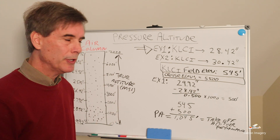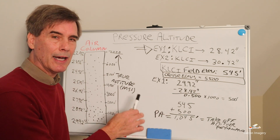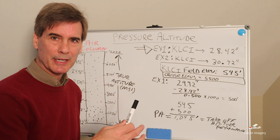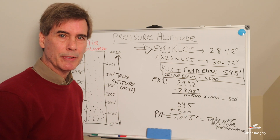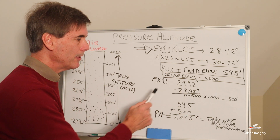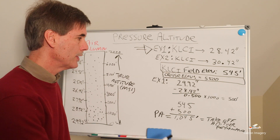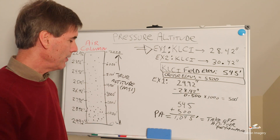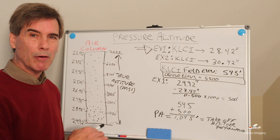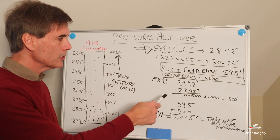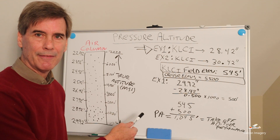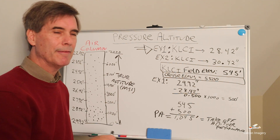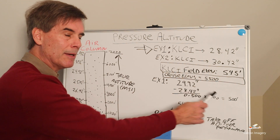The first thing we want to do is take the standard pressure for a standard atmosphere — 29.92 inches — and subtract from it the 28.42 inches. We come out with 0.500. Since every thousand feet we go up we lose an inch of mercury, here we're losing about half an inch of mercury. We multiply 0.5 by a thousand and come out with 500 feet.